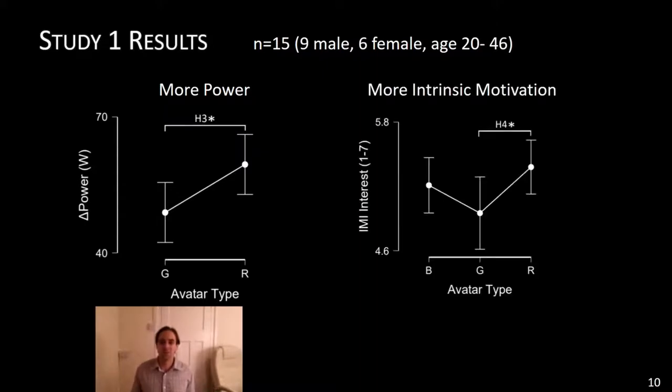And more intrinsic motivation. In this graph on the right, you see the baseline and then you see the intrinsic motivation, enjoyment, interest drops when competing against the generic avatar. It gets harder because resistance increases and then you have to compete against this generic avatar. The difference is not significant, but then it significantly comes up again when competing against the realistic avatar. So that's great. Those are promising results. It's really worth already customizing your own avatars. Makes you faster, makes you feel better. What's not to like?